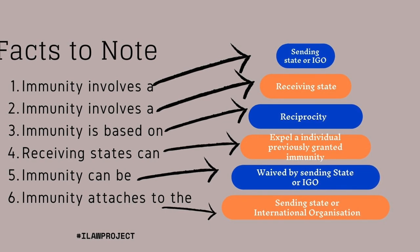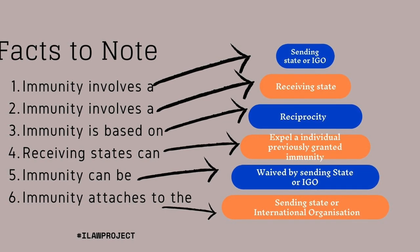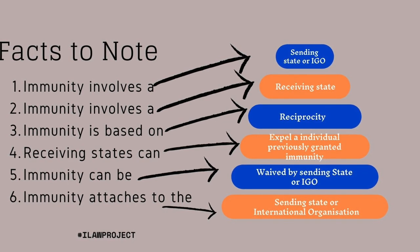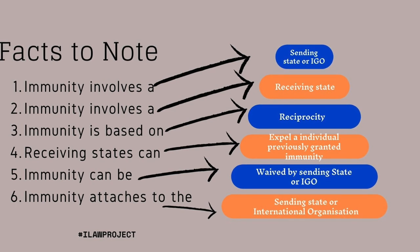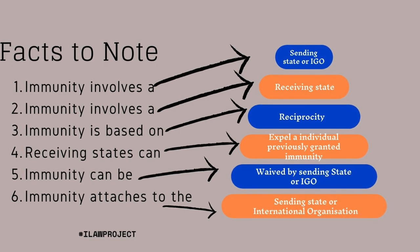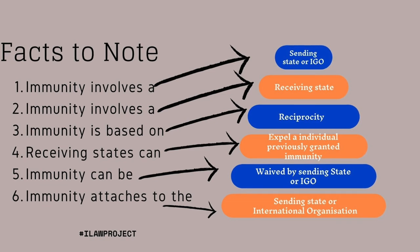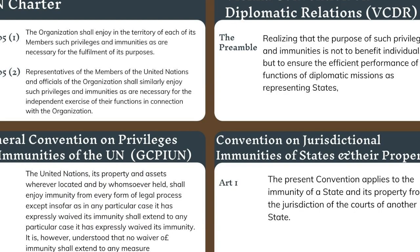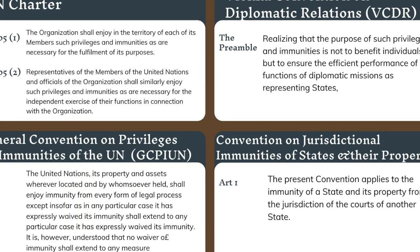Also, a receiving state can expel an individual or diplomat that enjoys diplomatic immunity. And generally speaking, immunity is granted on a reciprocal basis.